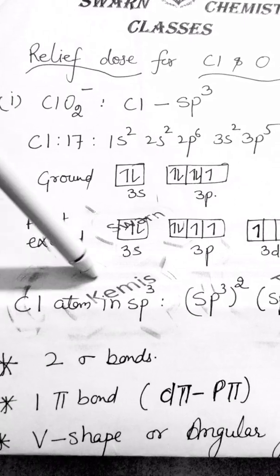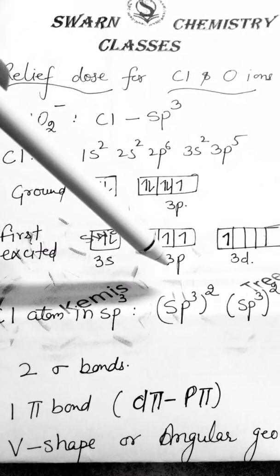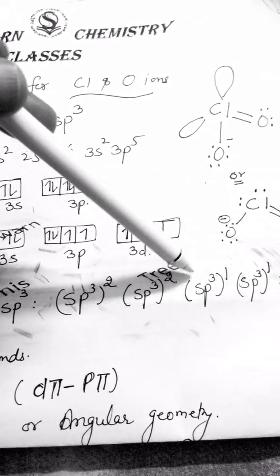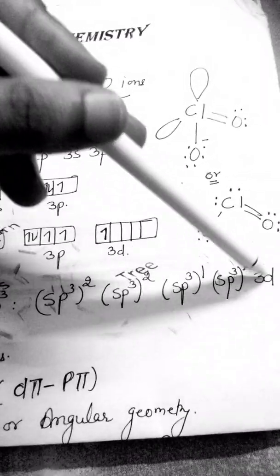So chlorine atom in this sp3 hybridization will be sp3 2 sp3 2 sp3 1 sp3 1 and 3d1.